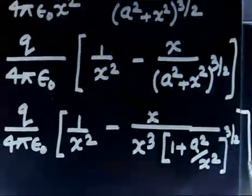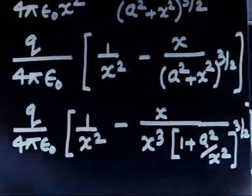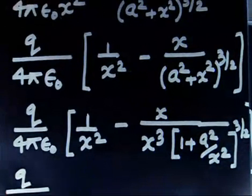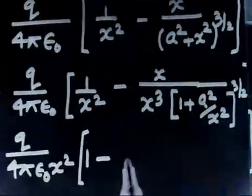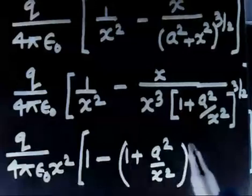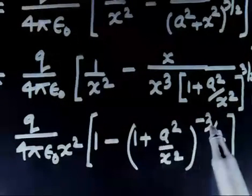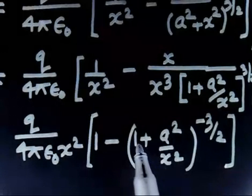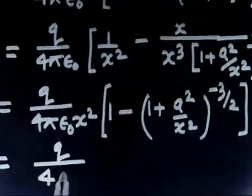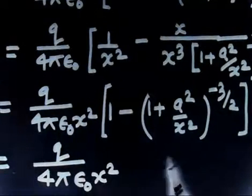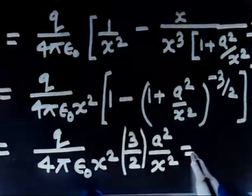Factoring out 1/X² gives Q over 4π ε₀ X² times [1 minus (1 + A²/X²)^(−3/2)]. Now since A²/X² is small, we use the binomial approximation: (1 + u)^n ≈ 1 + nu for small u. Applying this with n = −3/2, the term becomes approximately 1 minus 3A²/(2X²). The 1s cancel, leaving 3A²/(2X²). So the field simplifies to 3/2 times A²/X² multiplied by Q over 4π ε₀ X².